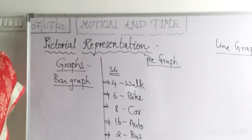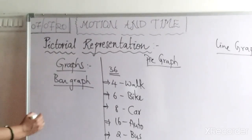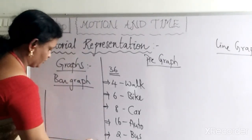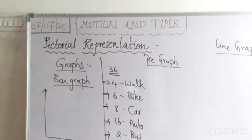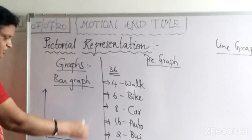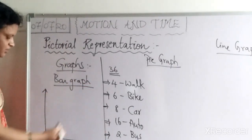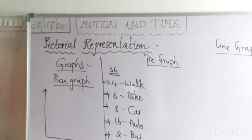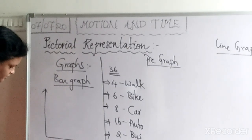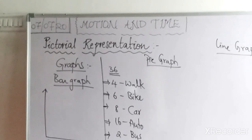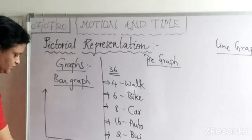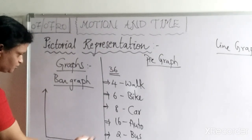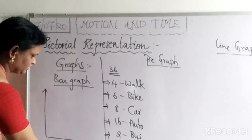Based on this data, we are going to construct a bar graph. On the x-axis and y-axis, we write the labels. On the x-axis, I am writing the transport modes starting from the least: bus with 2 students, then walk with 4 students, bike with 6 students, car with 8 students, and auto with 16 students.